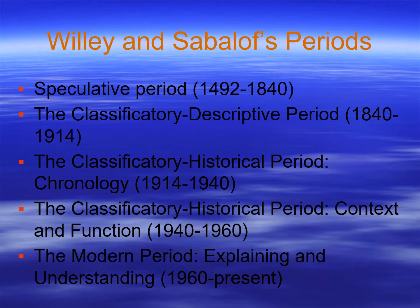Willey and Phillips were two American archaeologists who classified the history of American archaeology into periods. They described the speculative period, the classificatory-descriptive period, the classificatory-historical period with emphasis on chronology, then a classificatory-historical period focused on context and function, and finally the modern period of explaining and understanding. This work was written in the 1960s or 70s, so it doesn't treat post-modernism or post-processualism, which we will discuss.